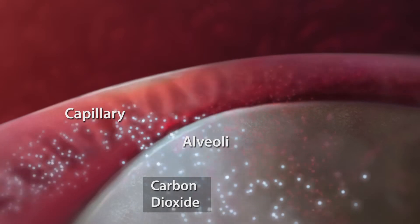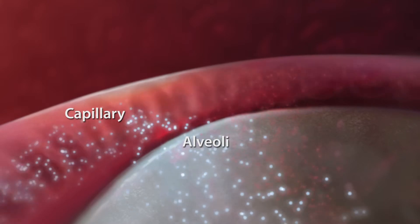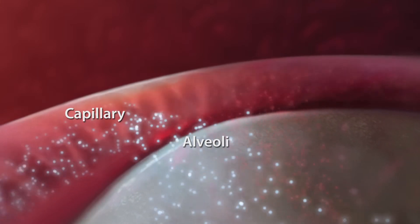Carbon dioxide produced by the body's energy consumption passes from the pulmonary artery to the capillaries and into the alveoli to be exhaled from the lungs.